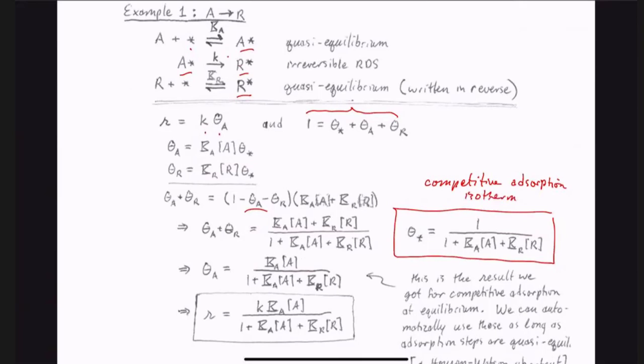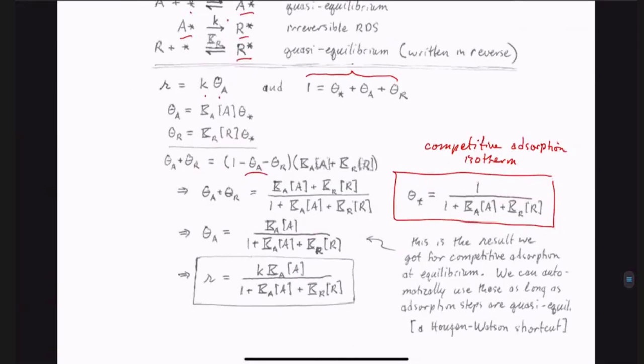It's 1 over 1 plus Ka times the concentration of A, and Kr times the concentration of R. This was our competitive adsorption isotherm. In this case, we're writing down the surface coverage of the empty sites. So now we have an expression for theta A. We just take this theta star, and we use this expression to write down that theta A is given by this expression. And now we plug that expression for theta A into the expression for R, and we have our rate law. It's that easy.